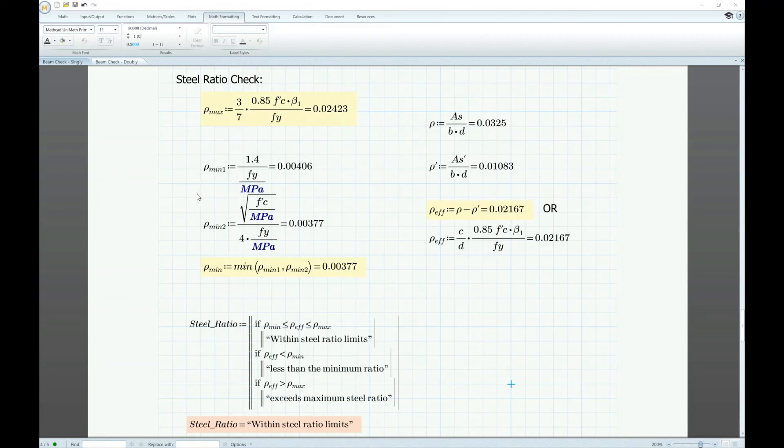And also ACI defines the minimum to be the minimum value of these two that gives us 0.00377. The actual steel ratio at the bottom bars is this one and the actual steel ratio at the top bars is this one. But since it's a double reinforced beam we take the effective, we can also use the formula which gives us the same value. So based on these results we can say that the reinforcement provided is within steel ratio limits.